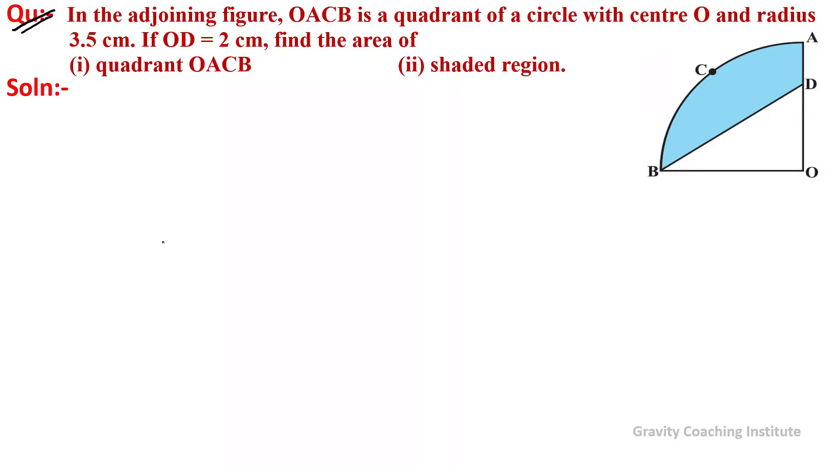In the adjoining figure, OACB is a quadrant of a circle with center O and radius 3.5 centimeters. If OD equals 2 centimeters, find the area of quadrant OACB and the shaded region. The radius of the quadrant is given as 3.5 centimeters.